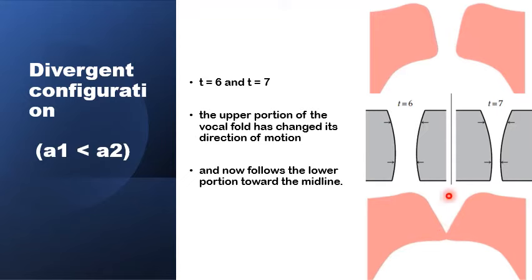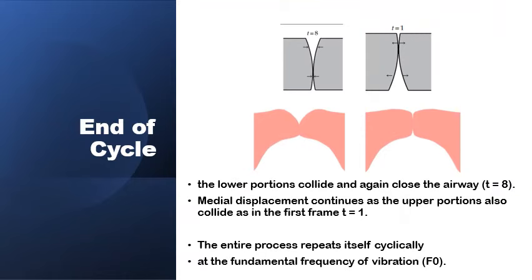In both T6 and T7, the glottic canal configuration is divergent, with a smaller entry into the canal than exit from the canal. This is again important in maintaining the self-driven oscillation of the vocal folds. Towards the end of the oscillation cycle, in T8, the upper ends of the vocal folds are about to reach the midline to close up the glottic canal completely, marking the end of the oscillation cycle. But once this is achieved, the pressure in the subglottic area will have reached the critical level to force the glottis open and start a new cycle of oscillation.